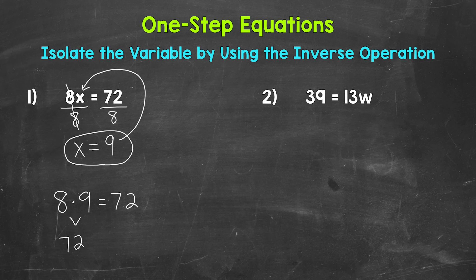Now one thing I do want to mention about plugging that 9 back into the original equation. Make sure to use something to represent multiplication. I used a dot. Putting the 9 right next to the 8, that would look like 89. Two numbers together does not represent multiplication. But when we have a number next to a variable, that does represent multiplication. So something to keep in mind.